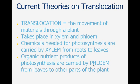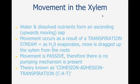Looking particularly at the xylem: water and dissolved nutrients form an ascending sap — ascending means to move up. Sap movement occurs as a result of a transpiration stream. As water leaves the leaves, more water is dragged up from the roots of the plant. Movement is passive, so no energy is required — the process is mostly by osmosis. The theory behind the movement of substances in the xylem is known as the cohesion-adhesion-transpiration theory, or the CAT theory.